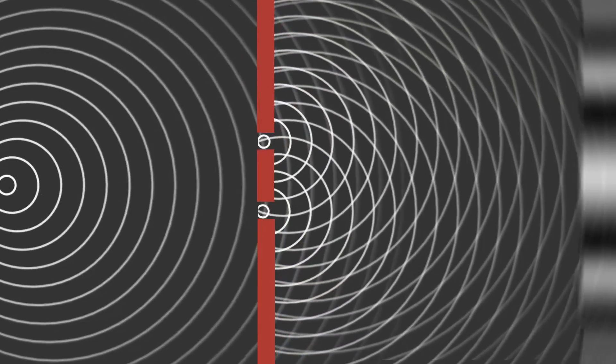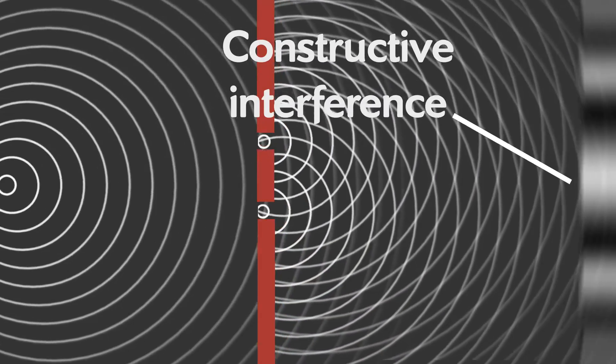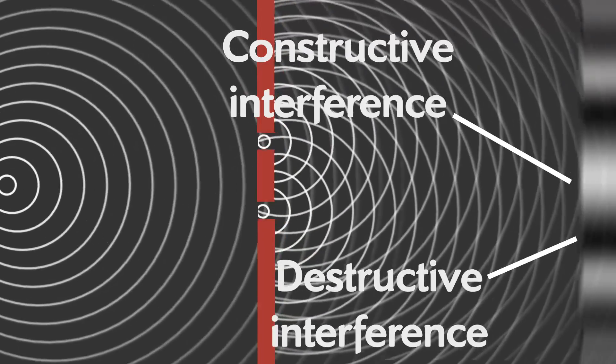All those bright points were the result of constructive interference, whereas the points where there was no light were due to destructive interference.